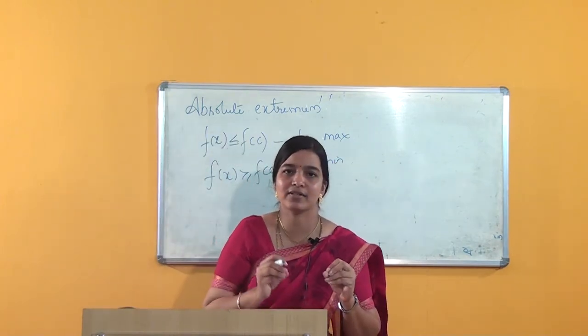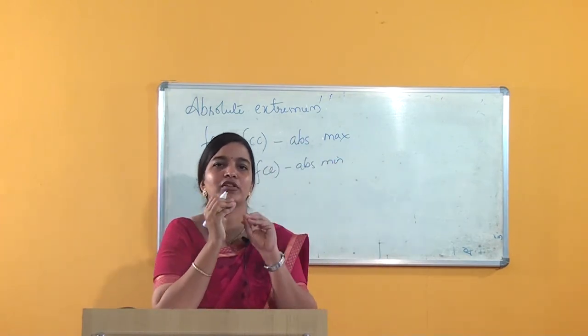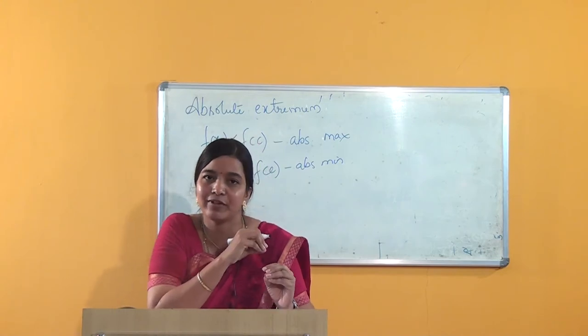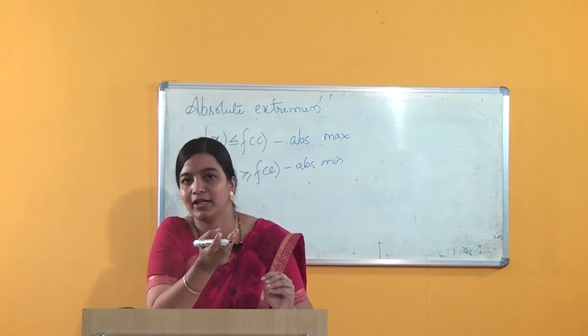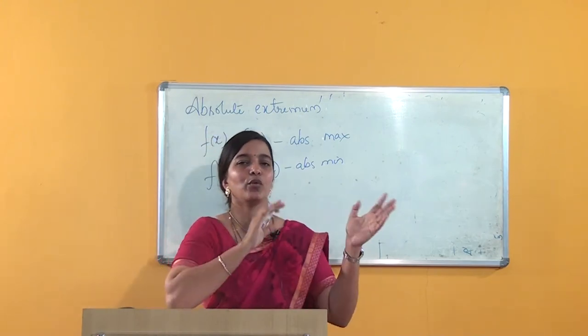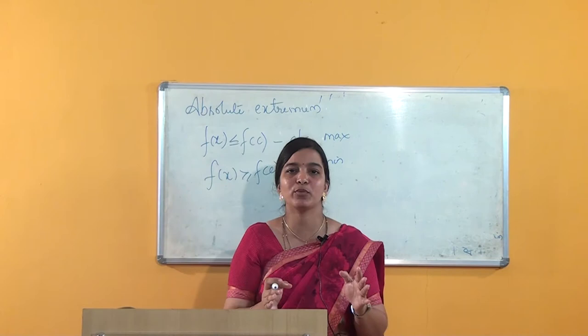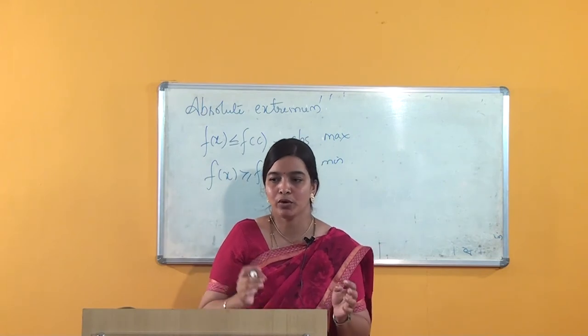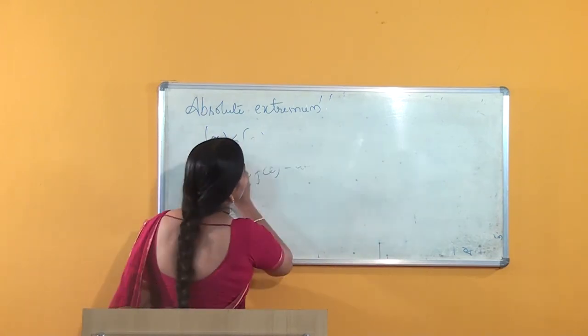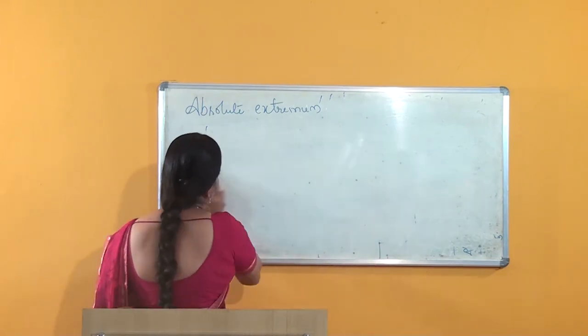Now the question arises: the same definition was stated for relative maximum value as well as relative minimum value. So what is the difference between these two? I will use a graph to explain it better.